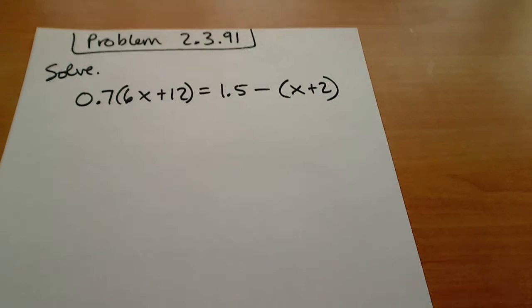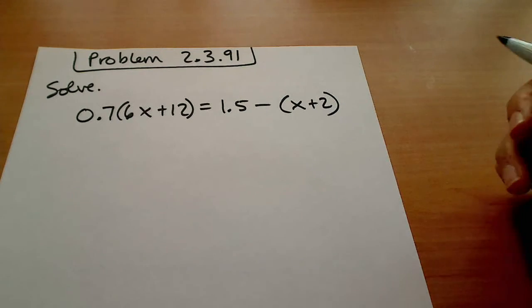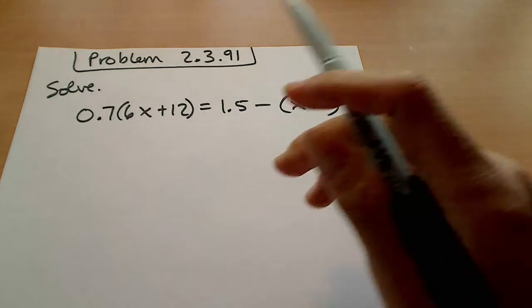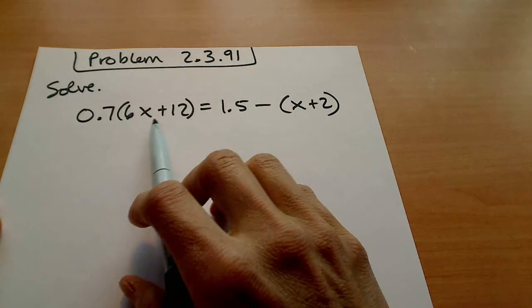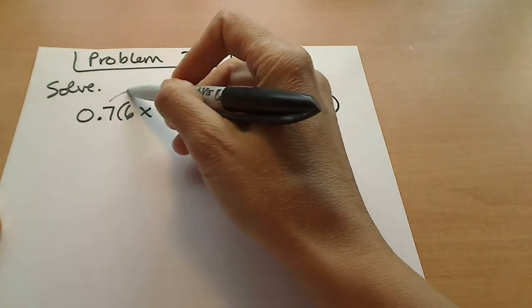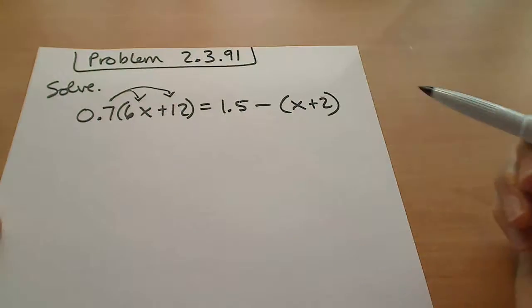Alright, this is problem 2.3.91 and we're solving. What we want to do is start by removing these parentheses, and the way to do that is to distribute. So we're going to distribute the 0.7, and right here we need to distribute this negative, so we're gonna take that through as well.